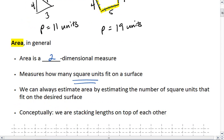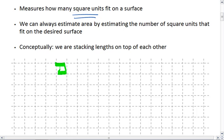When we look at area, we're looking at a square unit, which is composed of a 1 by 1 square. What we're doing when we're figuring out area is we're stacking lengths on top of each other. We could, if we wanted to, estimate an area by estimating the number of square units that fit on the desired surface.